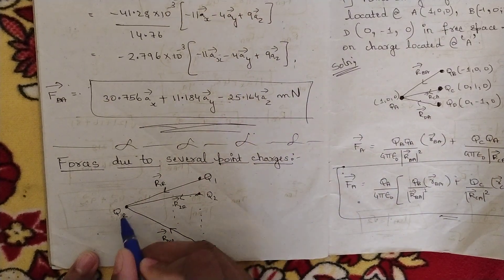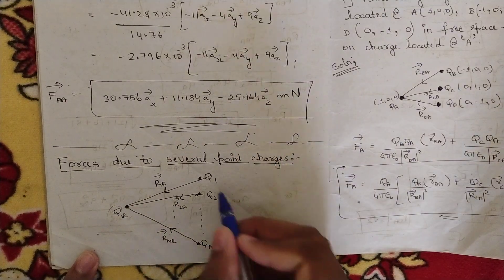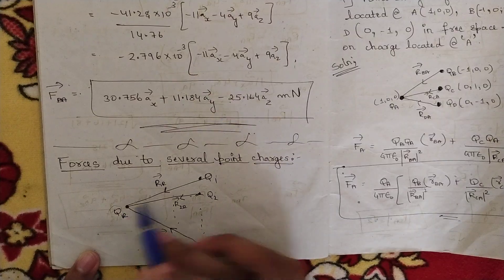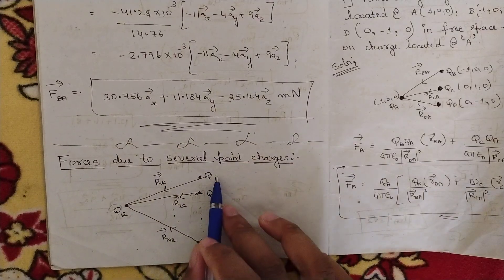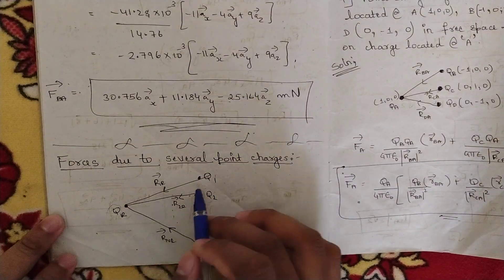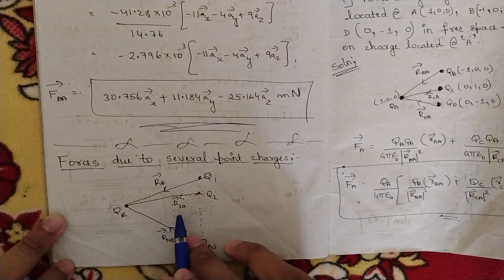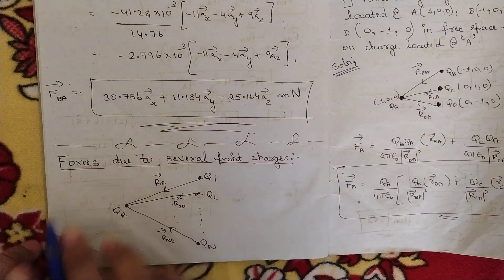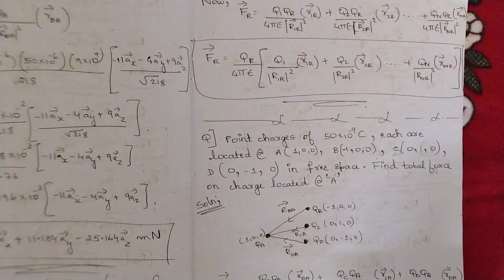Forces due to several point charges acting on a single point charge. Here let us consider one single point charge from where we are going to draw several point charges: q1, q2, up to qn. From this point charge we also get the adjacent position vectors — we have qr and q1, so we write r1r as the first position vector, similarly r2r and up to rnr. This is the structure of forces due to several point charges.